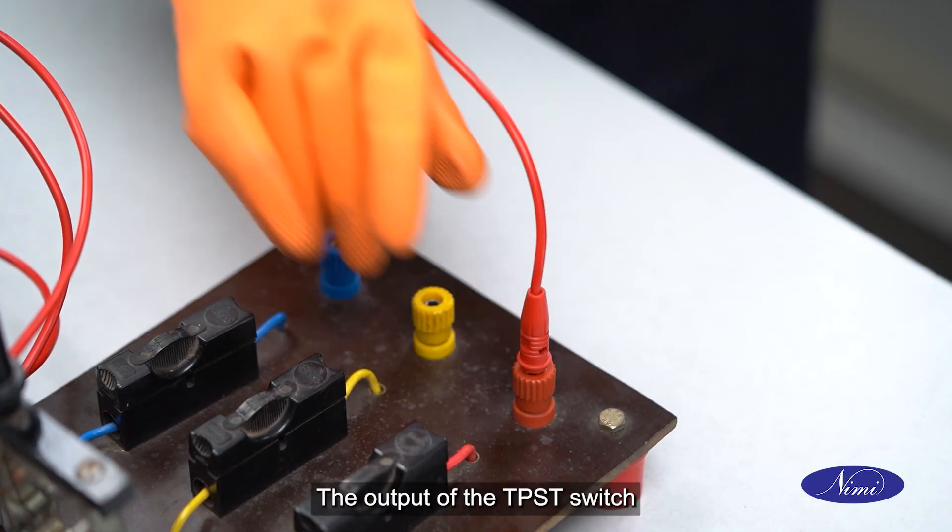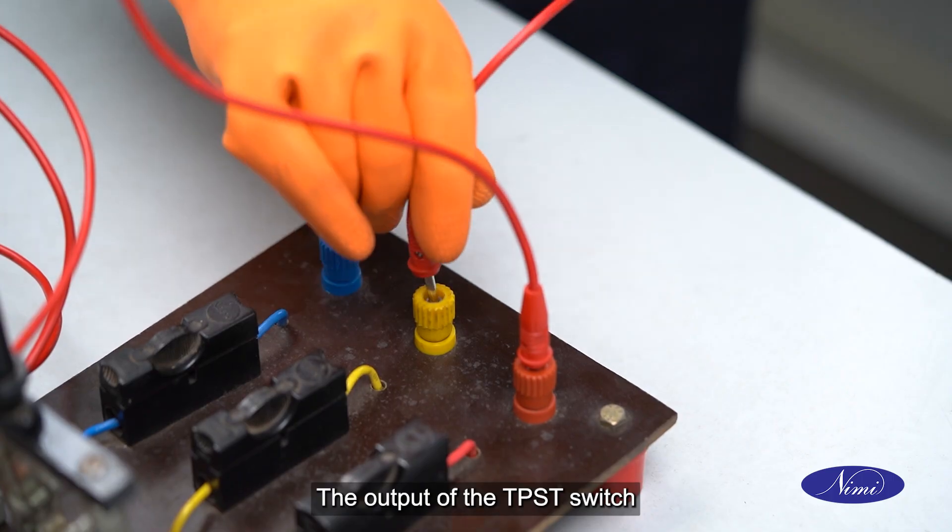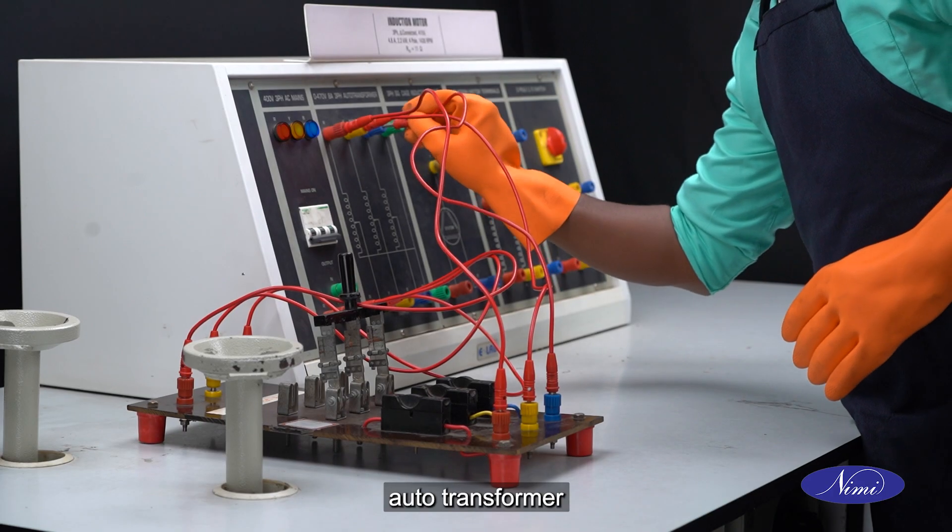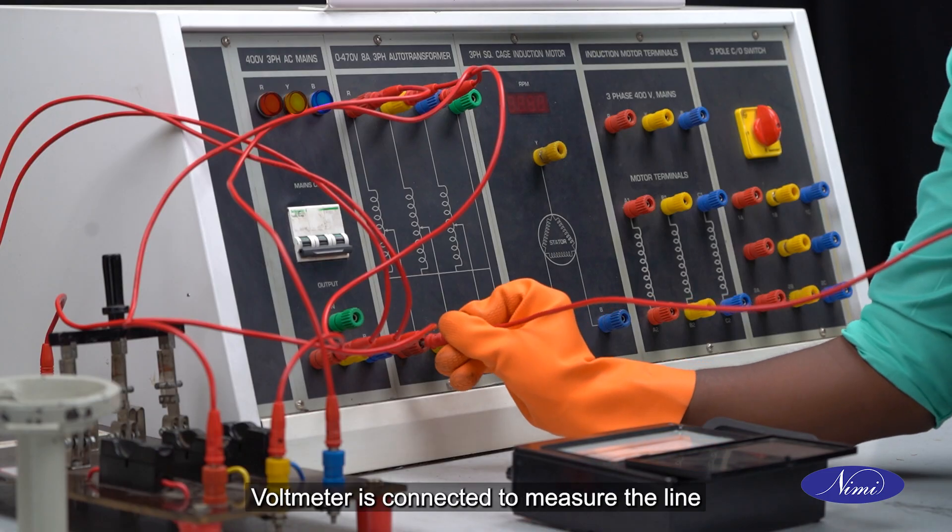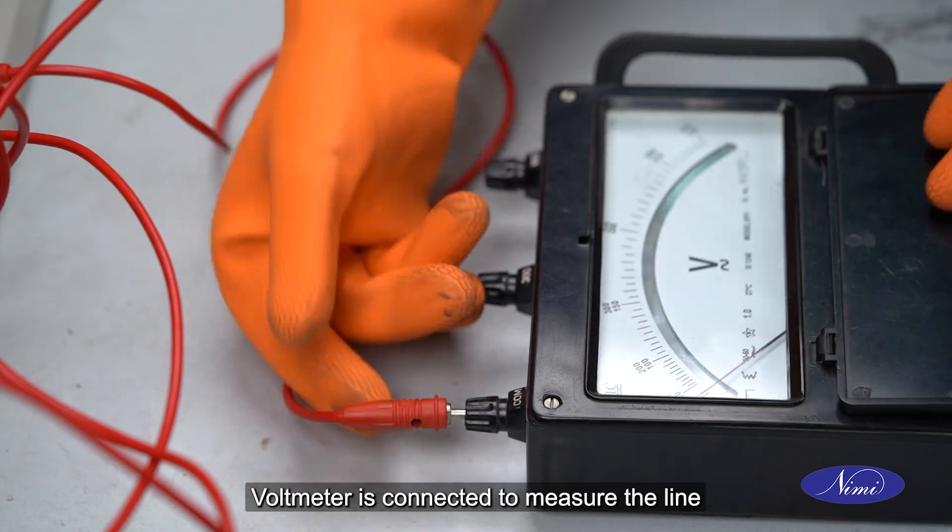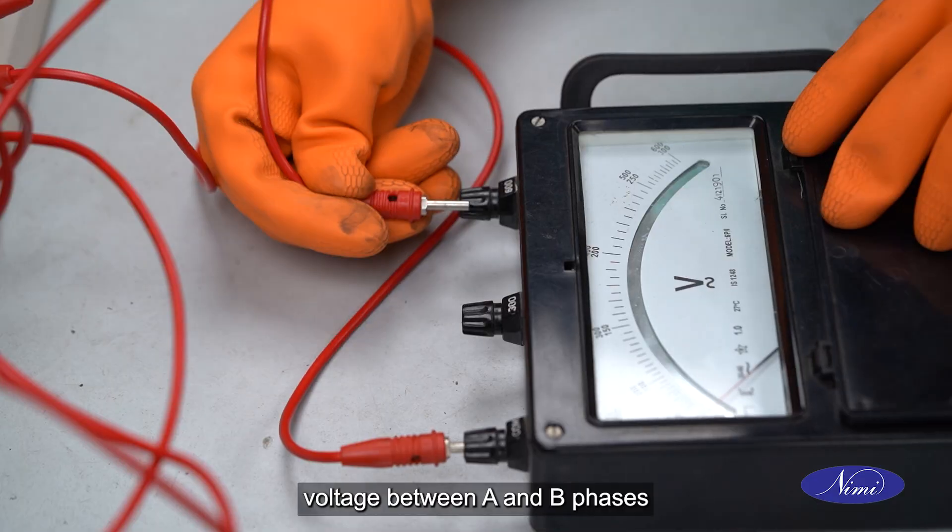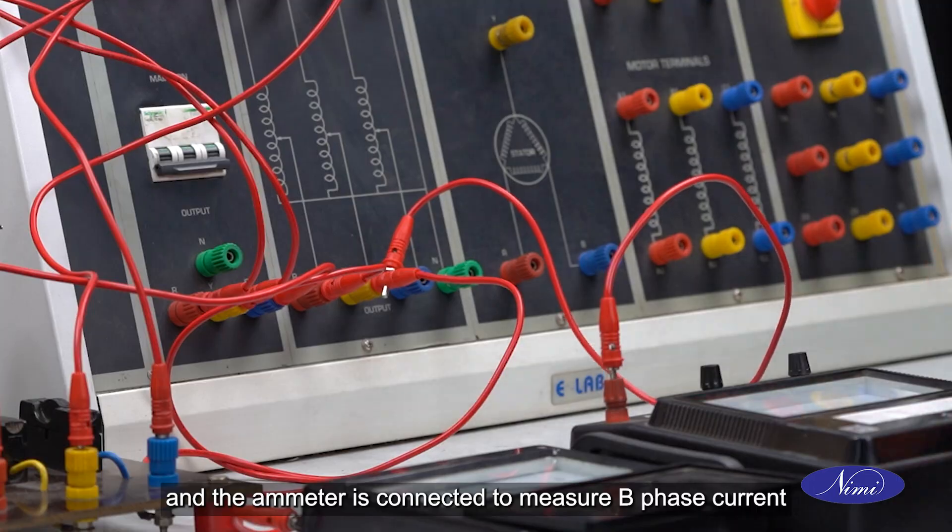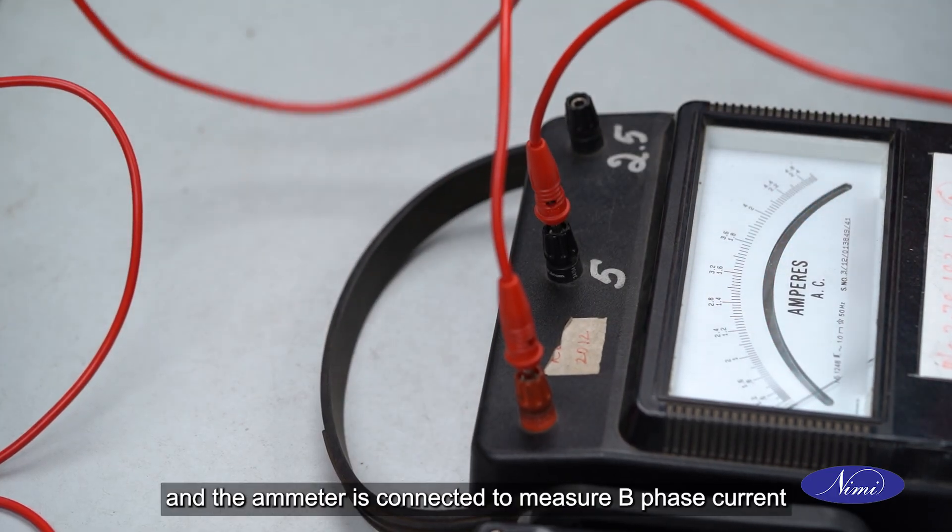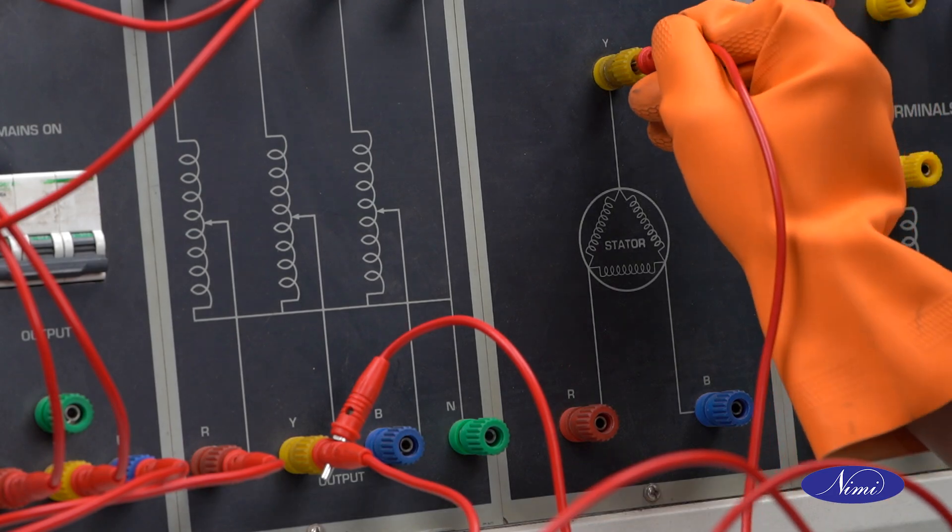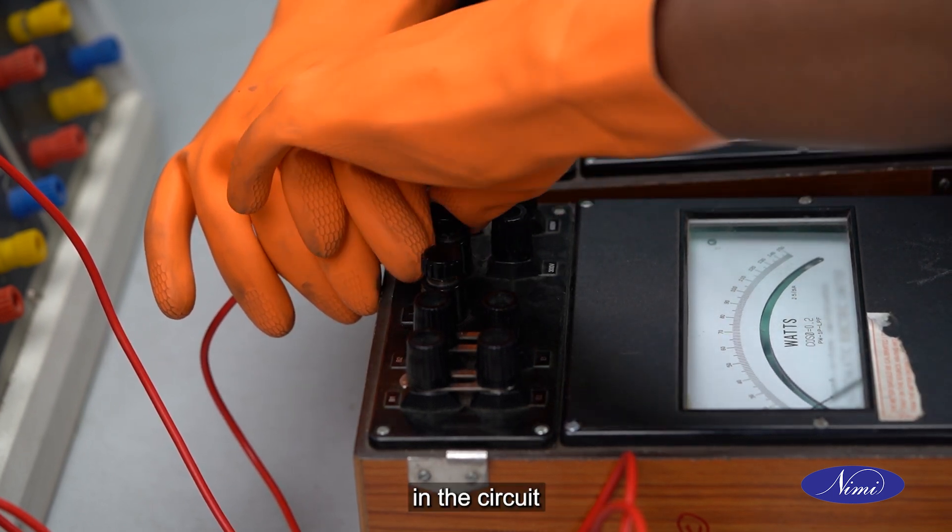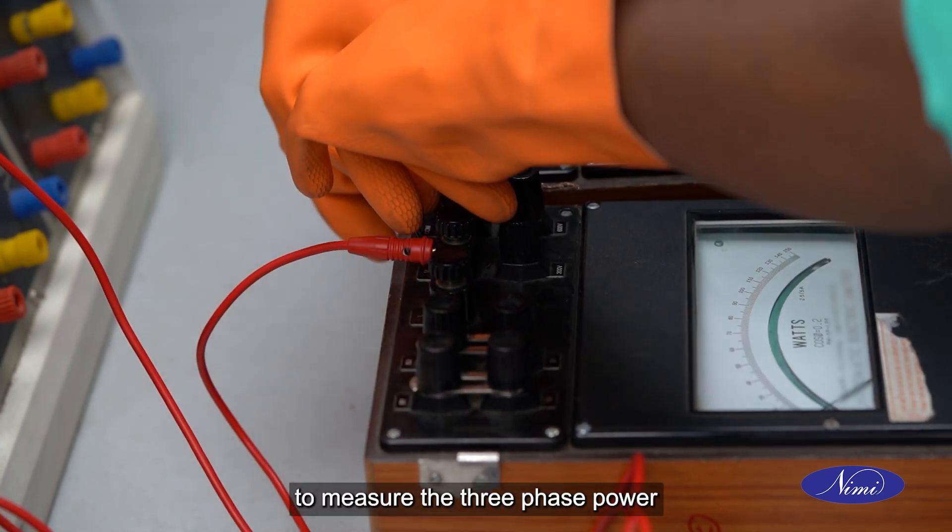The output of the TPST switch is connected to 3-phase auto transformer. Voltmeter is connected to measure the line voltage between A and B phases and the ammeter is connected to measure B phase current. Two wattmeters are used in the circuit to measure the 3-phase power.